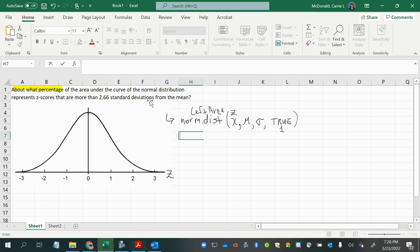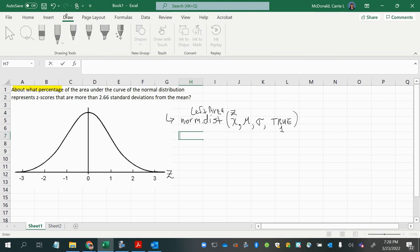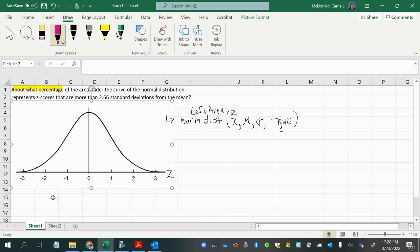Now, it says 2.66 standard deviations from the mean. So that would be any values or any z-scores that are greater than 2.66. Because remember, z-scores tell you how many standard deviations away from the mean you are.